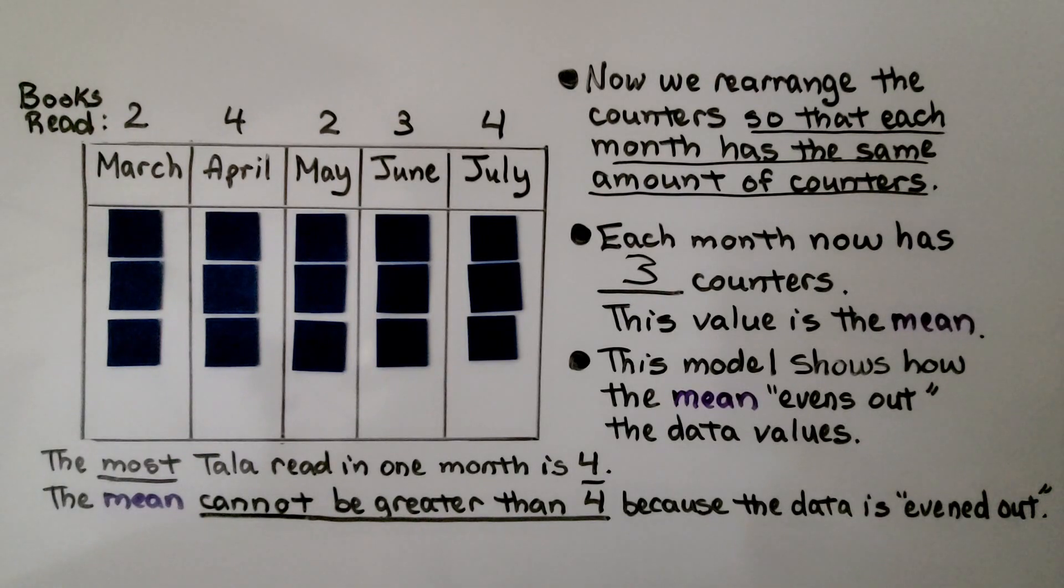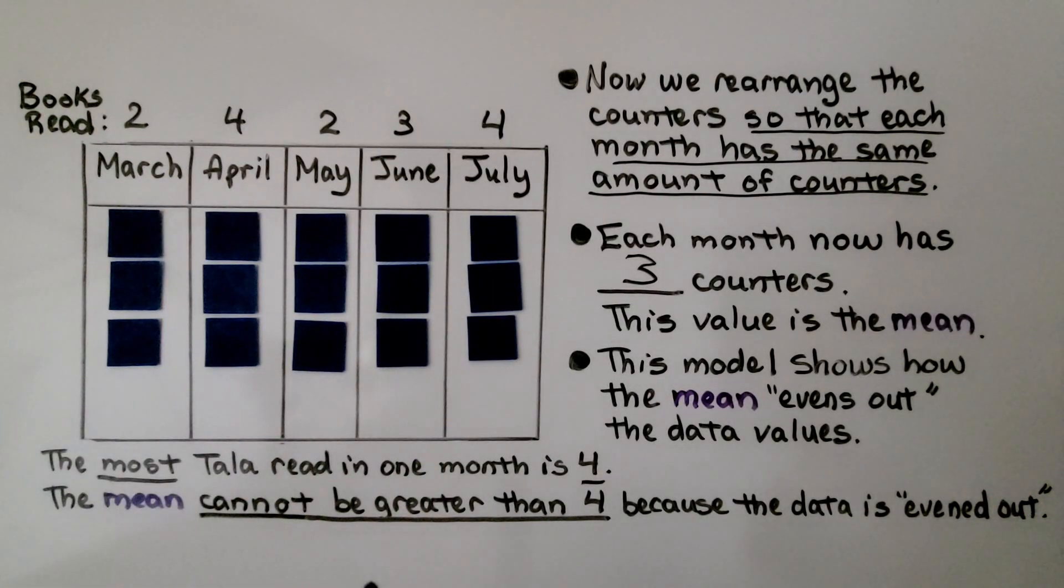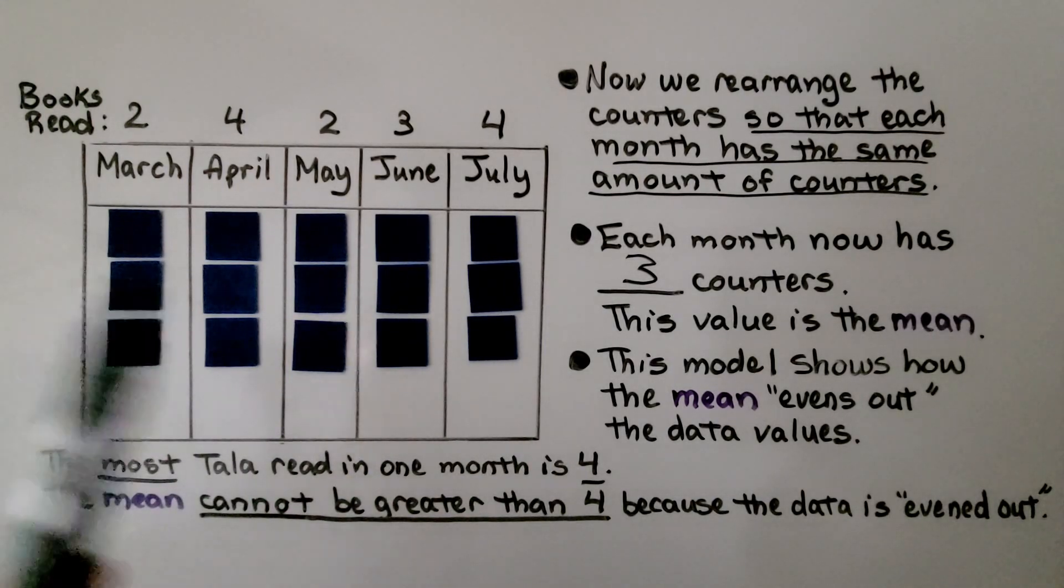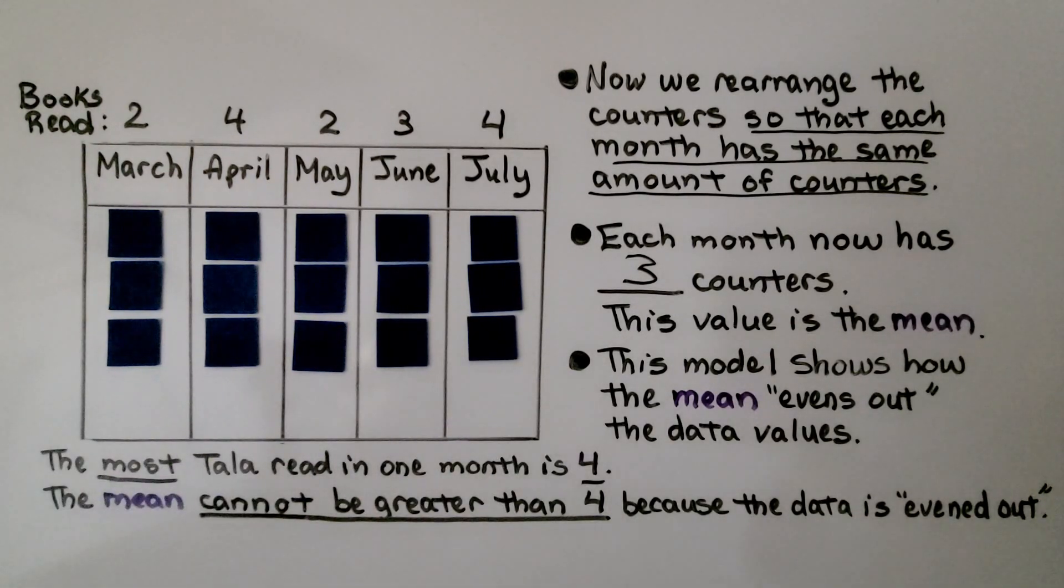This model shows how the mean evens out the data values. The most she read in one month was four, so the mean cannot be greater than four because the data is evened out. Any month that had a lesser amount got one of those four. It evened it out so they're all three. The mean or average is three.